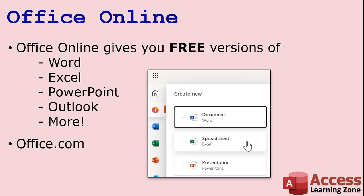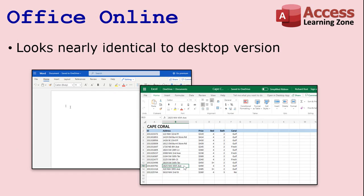For those of you who don't know, Microsoft has a version of Office called Office Online, and you get free versions of Word, Excel, PowerPoint, Outlook, and some of their other apps. All you have to do is go to Office.com and sign up for a free Microsoft account. The online versions are nearly identical to the desktop versions that you buy, and they've got most of the features that the average user is going to need.